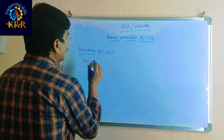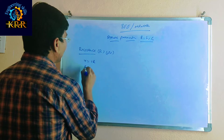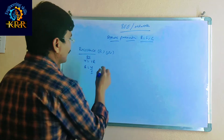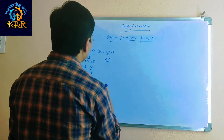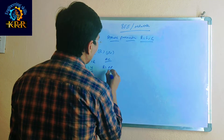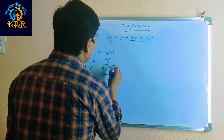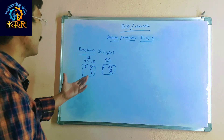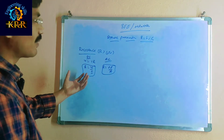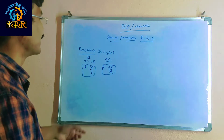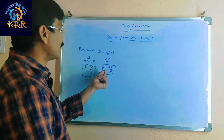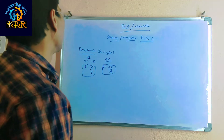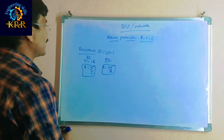V is equal to IR, and R is equal to V by I — this is the formula for the DC circuit. The resistance is also equal to rho L by A — this is the material resistivity formula. If it is DC power, we can calculate using V=IR. If any one value is given, the remaining can be calculated. This is the resistance.